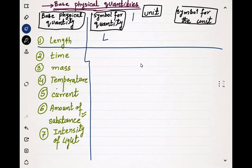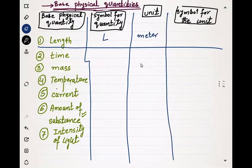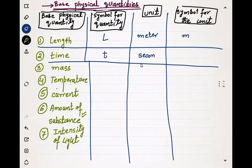The symbol for length is L, the unit for length is meter, and the symbol for the unit is m. The second quantity is time, represented by smaller t. The unit is second and the symbol for the unit is smaller s.